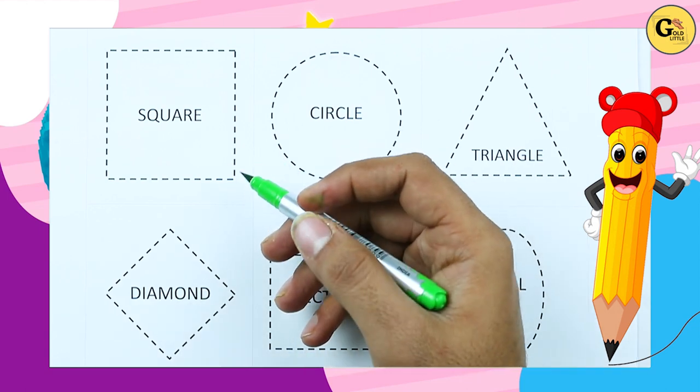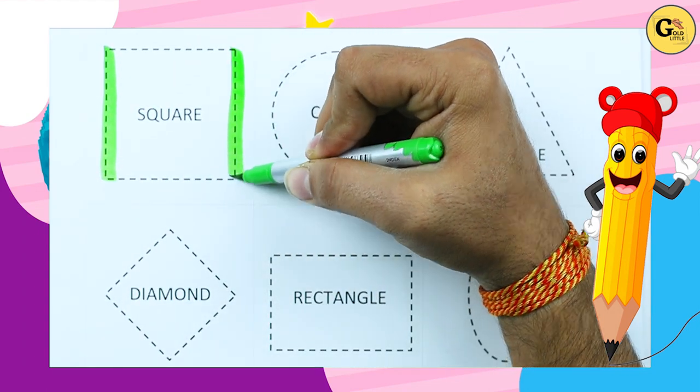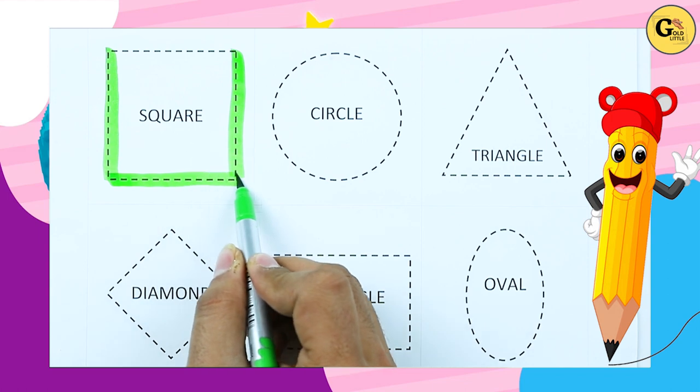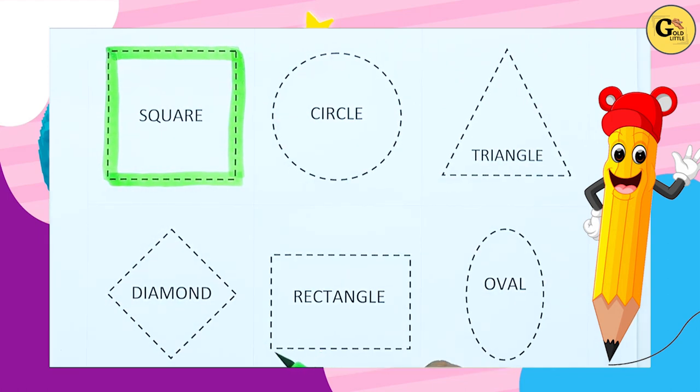It's square. One line, two line, three line, four line. Two slipping line, two standing line.